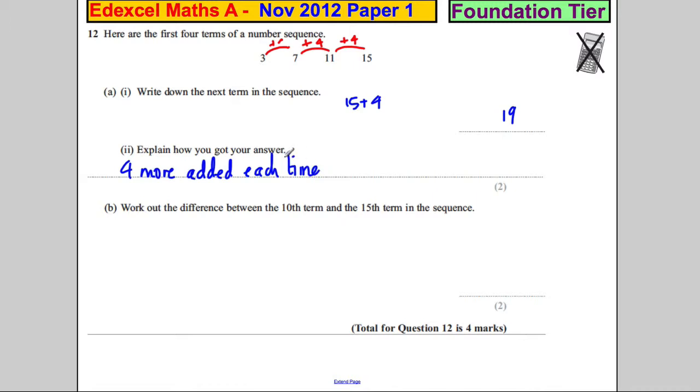Now work out the difference between the 10th and the 15th term of the sequence. Now let's just think about this. The first, the second, the third, the fourth, the fifth, the sixth, the seventh, the eighth, the ninth, the tenth, the eleventh, the twelfth, the thirteenth.